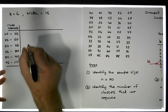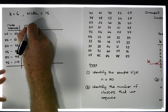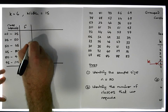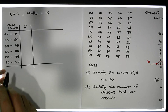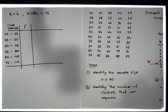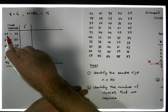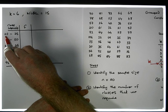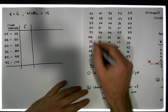Frequencies go in the second column — they represent how many values fall within each class. To calculate the frequencies, we walk through the dataset counting how many values are greater than or equal to 20 and less than 45, so how many values are less than 45.